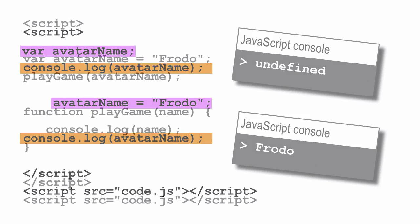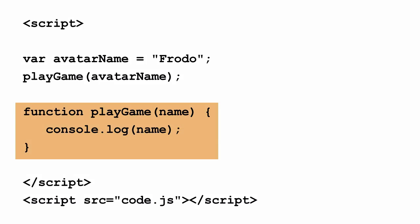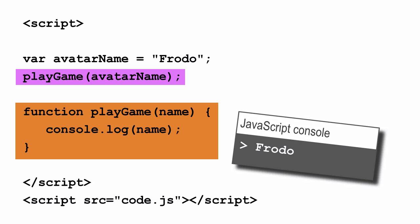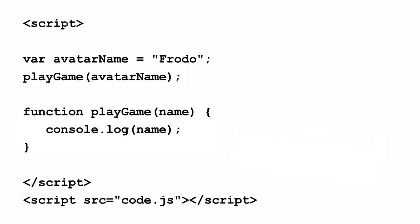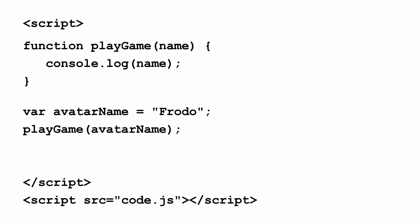In JavaScript, function declarations are also hoisted, but in a slightly different way. In this example, we've defined a function play game at the bottom of our code, and we're calling the function play game above where the function is defined. And this code works just fine — we see the name that we're passing into the function displayed in the console. The reason this works is because all function declarations are parsed before the rest of the code. It's as if we take the entire function declaration and move it above the rest of the code, so both the function name and the function definition are defined before the rest of the code is evaluated.